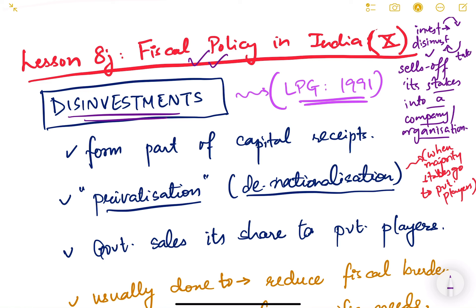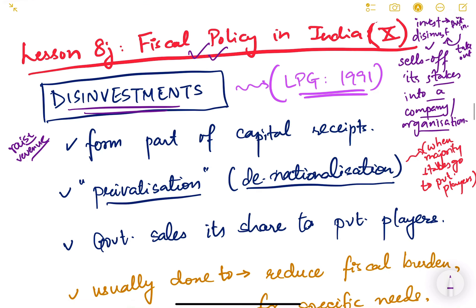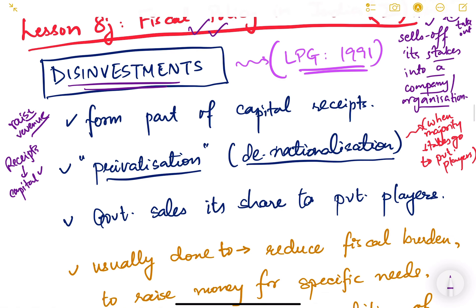Disinvestment means that the government shares its stake in a company or any organization. To invest means to put money in; to disinvest means to take money out. So disinvestment is a very important policy of the government in order to raise revenue.